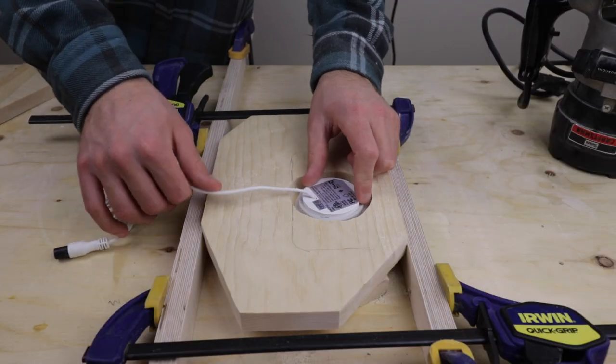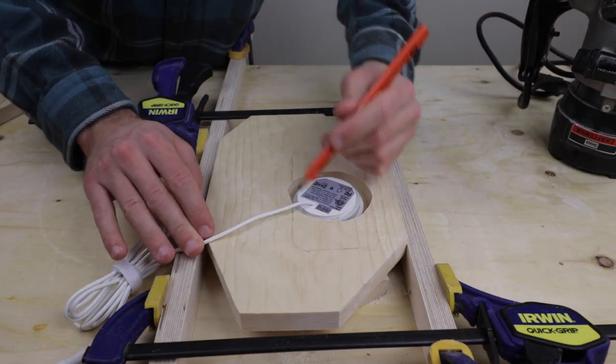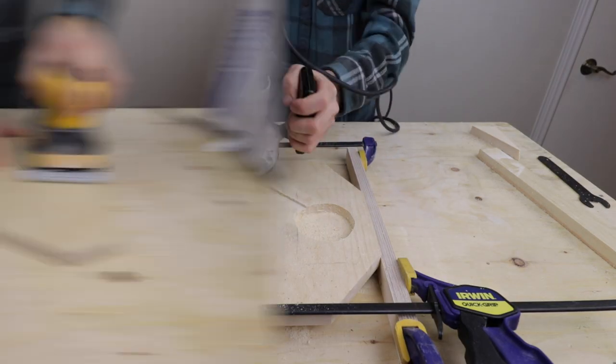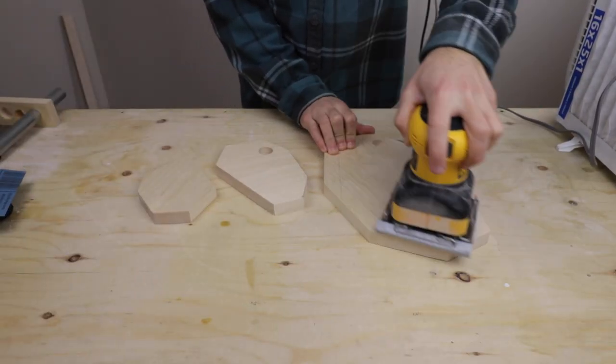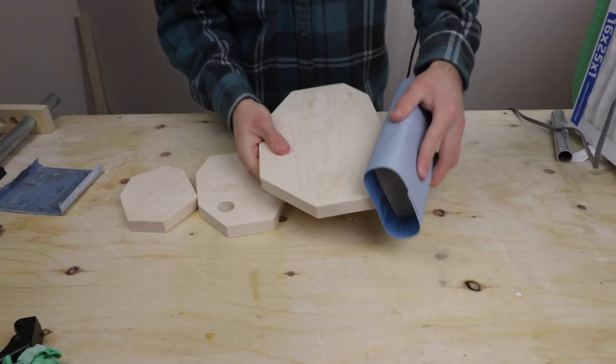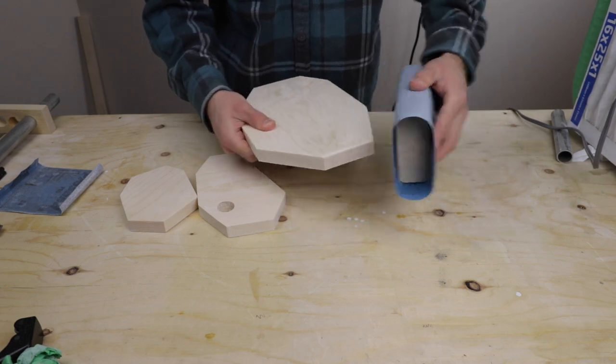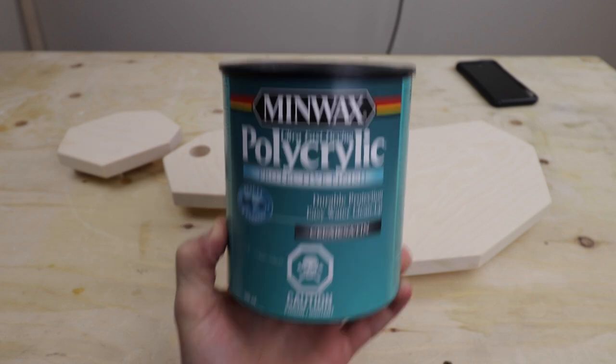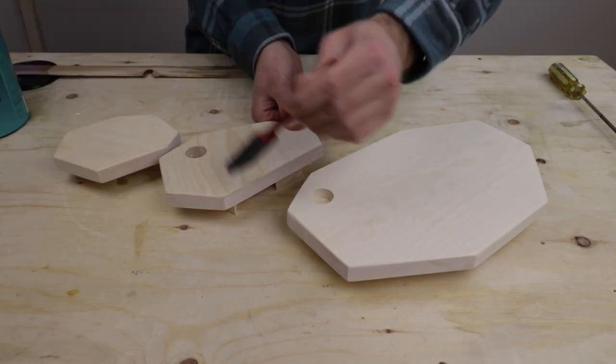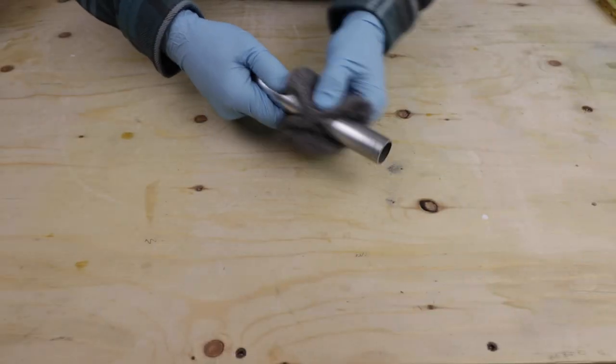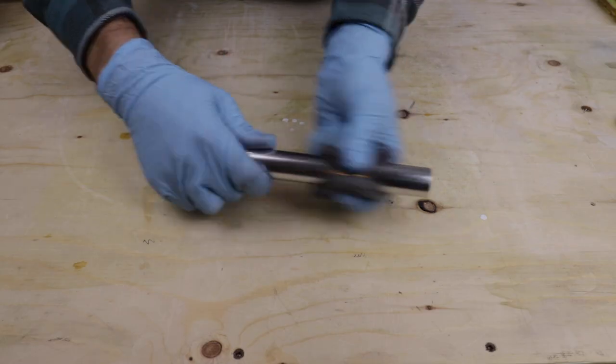I then marked out a position for the charging wire to travel through. After that, I sanded all of the components to 220 grit and used a sanding block to round over the exposed edges. Then I finished off the wooden shelves with Minwax Polycrylic in clear satin. It provides a nice low gloss finish and doesn't discolor the wood. While the shelves dried, I used some steel wool to clean up the conduit.